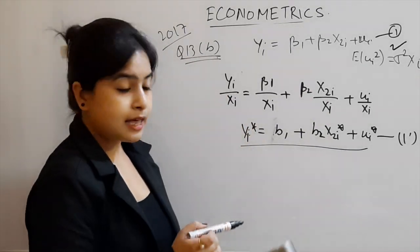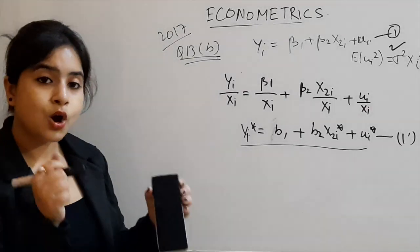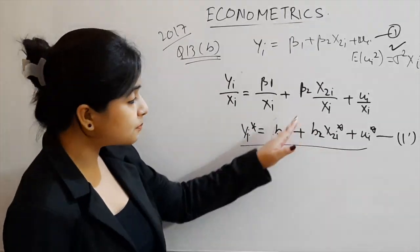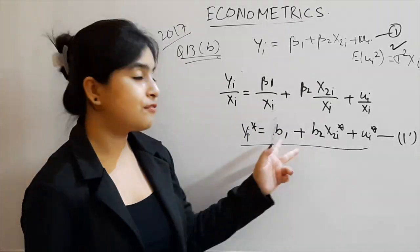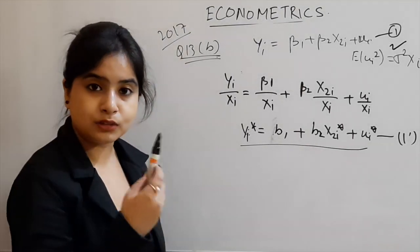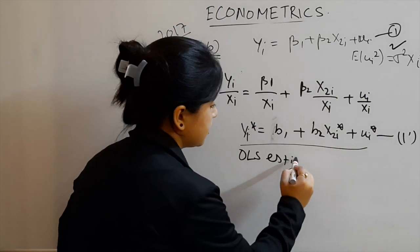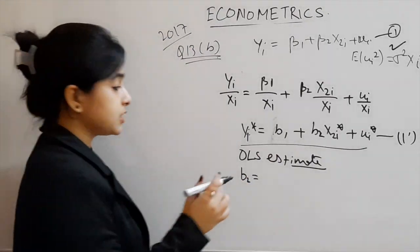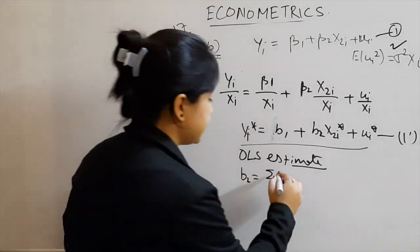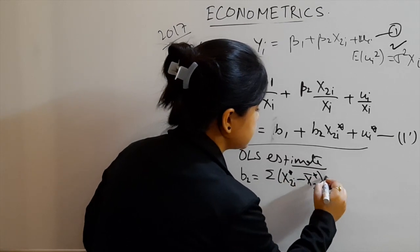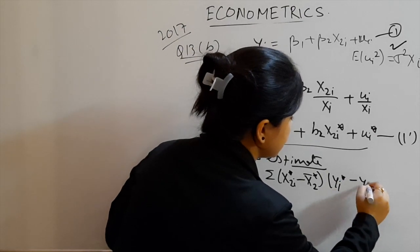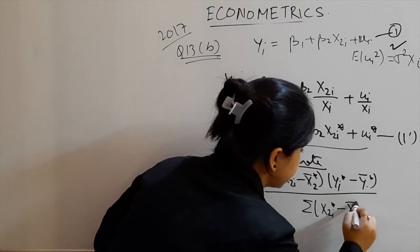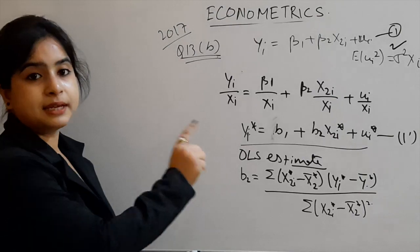This transformed model is a CLRM model with all assumptions holding. Once we apply the OLS estimate to β₂ in this transformed model, that will be the GLS estimate of β₂. The OLS estimate from the normal equations gives: β₂ hat = Σ(x₂ᵢ* − x̄₂*)(yᵢ* − ȳ*) / Σ(x₂ᵢ* − x̄₂*)².